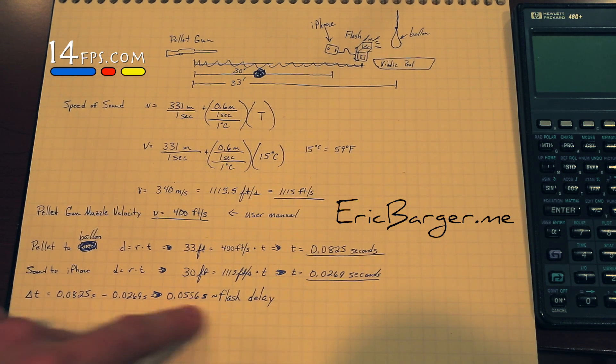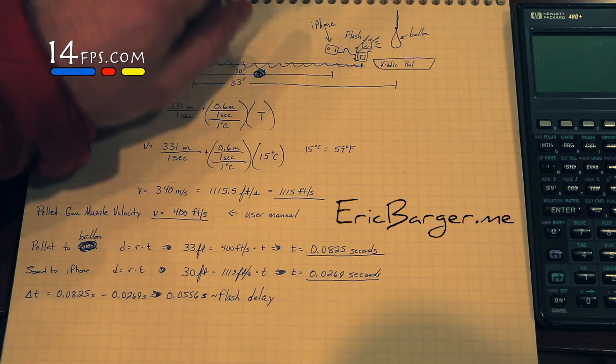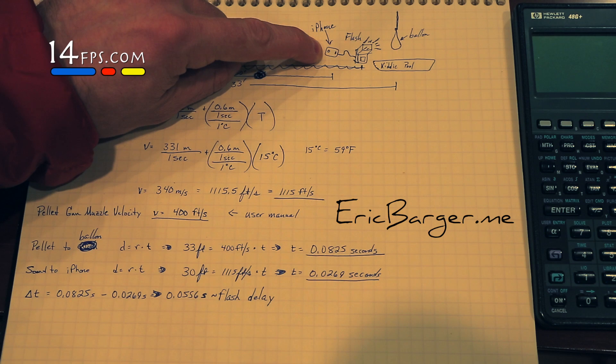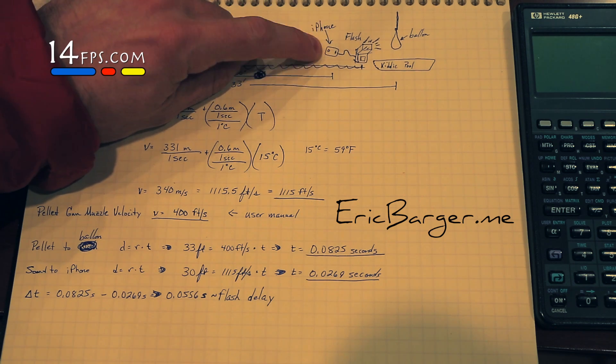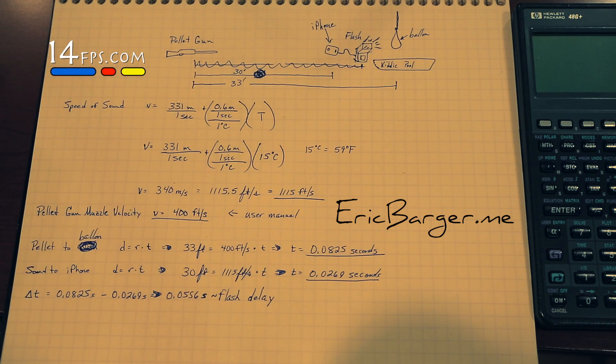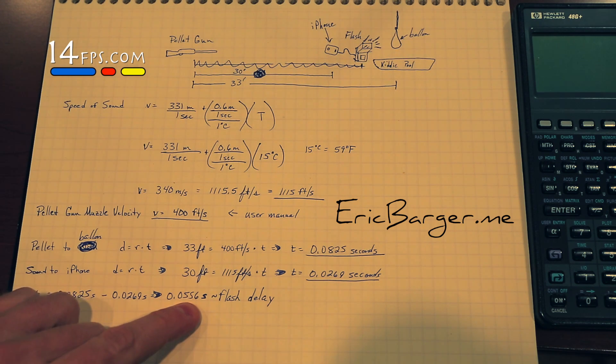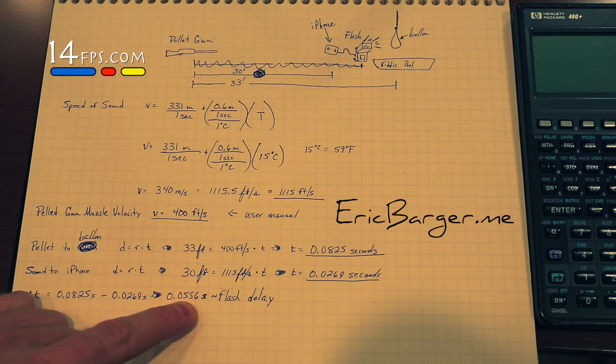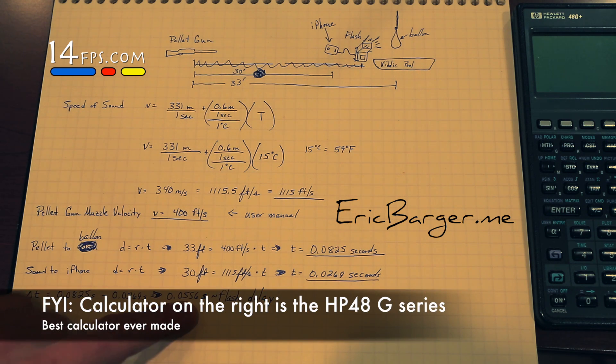This is what you would typically plug into Trigger Trap for the flash delay, but you can't do that exactly, because it's going to take a good one to four thousandths of a second for the iPhone to communicate with the flashes to fire. Not a long time, but if you took four thousandths of a second off, you would be down to 0.0516 seconds. So it does make a difference.